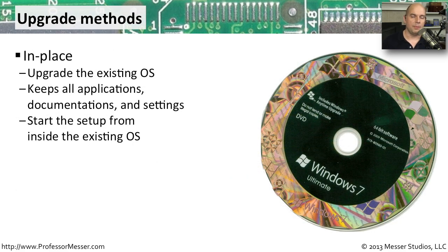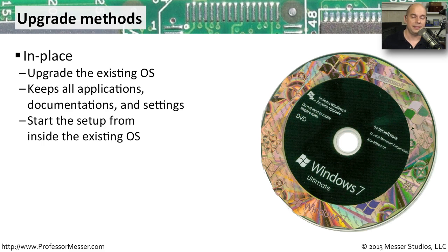There are two ways to upgrade the operating system on your computer. You can do an in-place upgrade, or you can do a complete clean install. The in-place upgrade is the version that allows you to keep everything exactly where it is. All of your applications are still on your computer. All of the documents and the pictures and the presentations you've created — they're all there. You don't lose anything by performing an in-place upgrade. To start the in-place upgrade, you have your existing operating system already loaded, you put the new installation media in your DVD-ROM, and you start the operating system upgrade. So your existing OS is running, and you begin the upgrade process immediately as your existing operating system is still active.